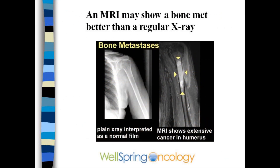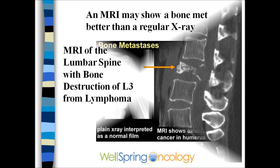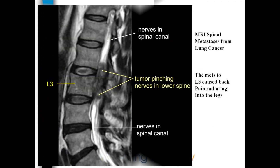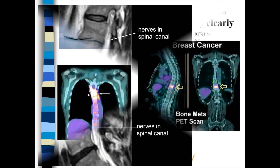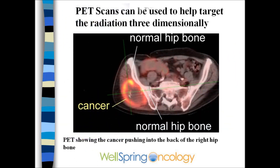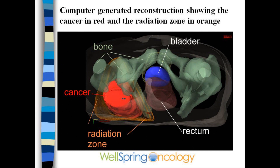An MRI is a sensitive way to pick up bone lesions, shown here in the humerus. Here an MRI shows bone destruction in the spine, and it is very good for looking at soft tissue like the spinal cord and spinal nerves — here we see the nerves being pinched. PET scans are also very good because they show every bone in the body. Here a PET CT scan shows a tumor invading the left iliac bone, and here a CT reconstruction on a radiation machine to target this mass.